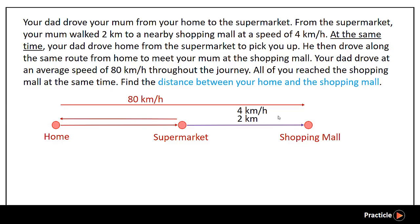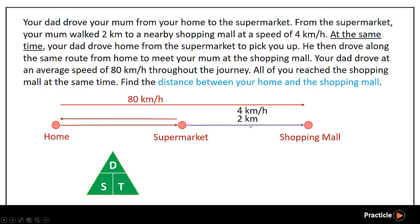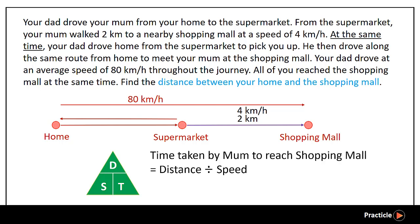Since this is a speed question, we would naturally think of the DST triangle — the distance-speed-time triangle. The first question we need to ask ourselves is: what do we know from the speed diagram? We know the distance your mom traveled, which is 2km, and her speed, which is 4km per hour. Since we know the distance and speed, we can find the time taken by your mom: distance divided by speed, so 2 divided by 4 gives us 0.5 hours.